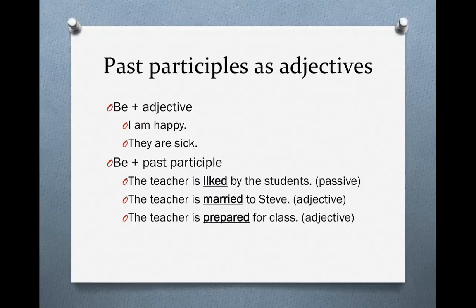First, let's talk about past participles as adjectives. You know what a past participle is — we use it when we're making the passive: a form of the verb be, plus the past participle, plus possibly a by-phrase. Past participles, while used in passive sentences, can also be used in English as adjectives.